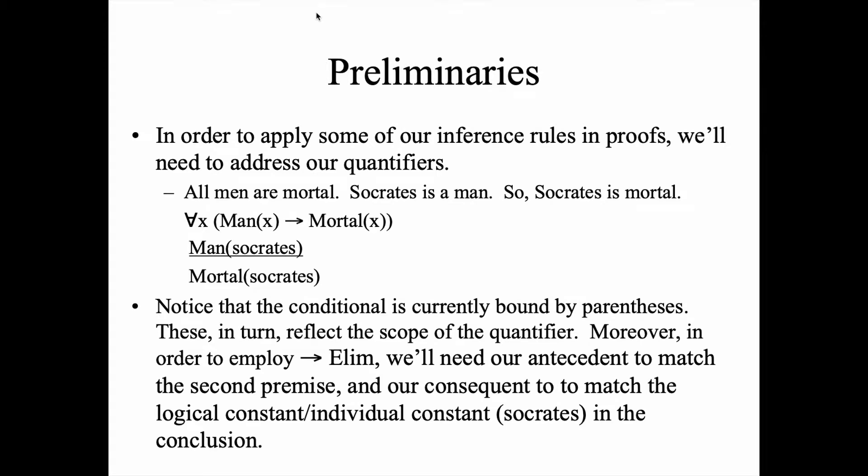Let's quickly review what we're looking at when we examine a quantified sentence. Take the example: All men are mortal; Socrates is a man; therefore, Socrates is mortal. The first sentence, 'All men are mortal,' is a quantified sentence — more specifically, we have the Universal Quantifier ranging across men and mortal things. The second sentence is an atomic sentence involving an individual constant, specifically the name Socrates.